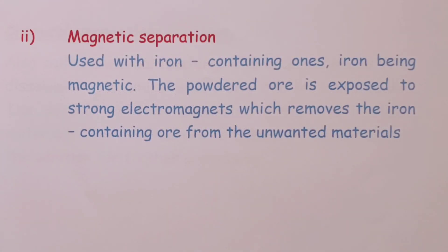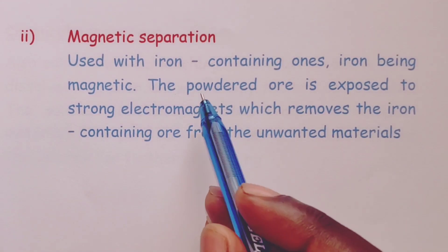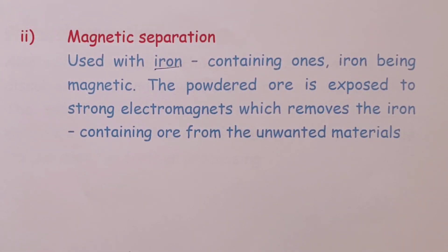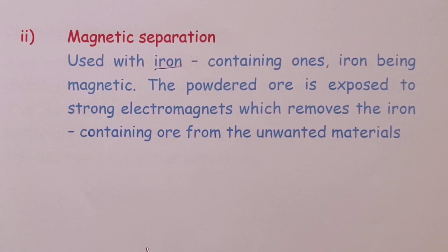Magnetic separation is usually used with iron-containing ores. We do this because iron is magnetic. In this case, the powdered ore is exposed to strong electromagnets, which removes the iron-containing ore from the unwanted materials. It is a very simple process.